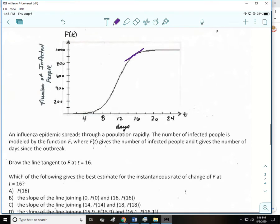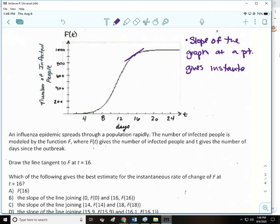Now I want you guys to make a note that the slope of the graph at a point gives the instantaneous rate of change. Sometimes your graph is a straight line and it's easy to find the slope. Sometimes your graph is curvy like this one, so then you just draw a little tangent line and you can estimate it.